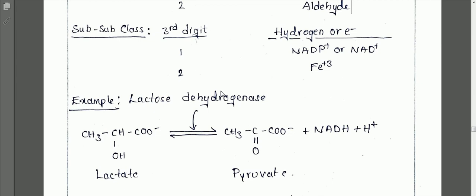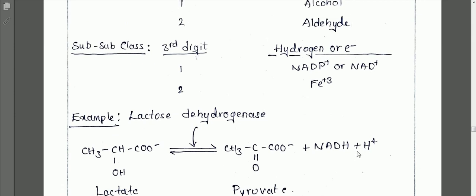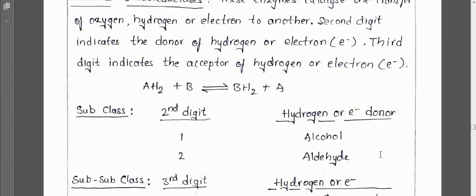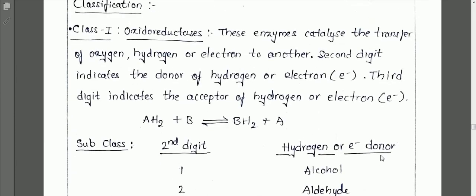An example of oxidoreductases is the lactate dehydrogenase enzyme. One example of its reaction is that it acts on lactate to form pyruvate, and the acceptor components are NAD+ / NADH + H+. This is about oxidoreductases.